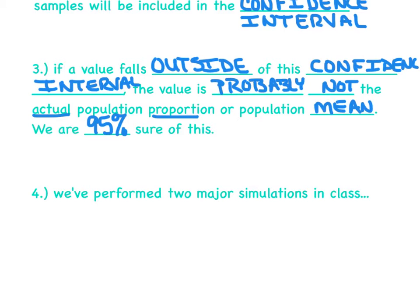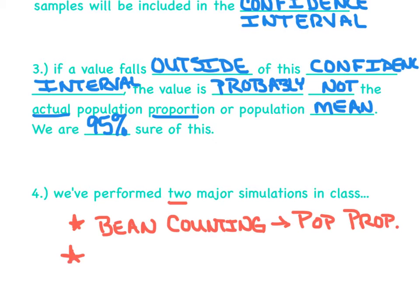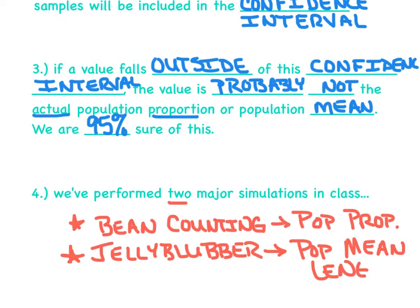A quick recap of what we've done in class. We've performed two major simulations. The first one was bean counting. We had a brown paper bag with a combination of black beans and white beans, and we were trying to figure out what the proportion of black beans was. We were trying to use these samples to approximate or estimate the population's proportion of black beans. The second major simulation was the jelly blubber fish, where we were trying to estimate the population's mean or average length of the jelly blubbers.